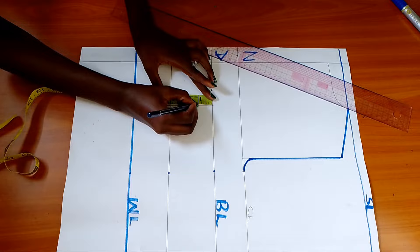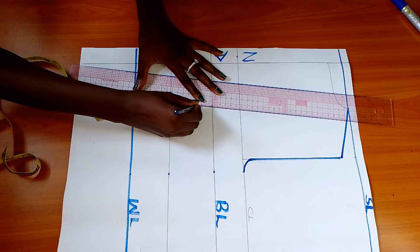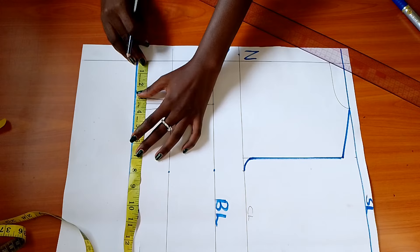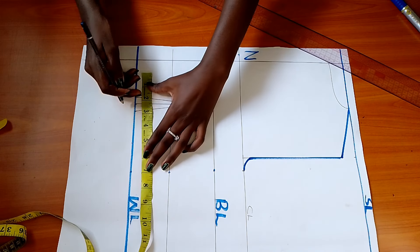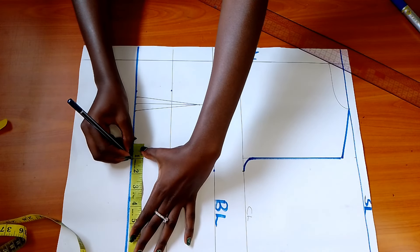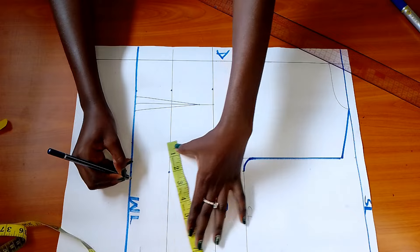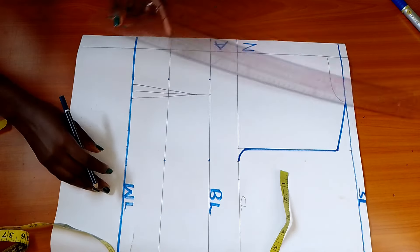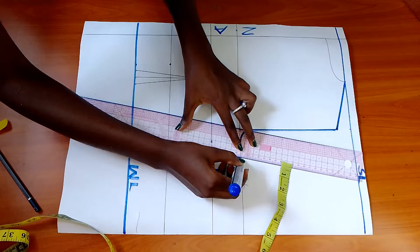In addition to that, measure on it the dart width of one inch. For dart depth, reduce it by one inch from bustline and mark that apex or point once, then finish the dart. Moving forward, measure quarter waist circumference on waistline from center line plus one inch dart replacement plus 1.5 inches more stitching allowance.